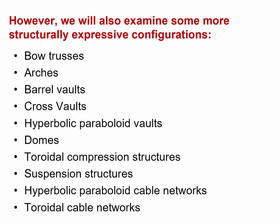While we're going to deal predominantly with this meat and potatoes approach to structures, we're also going to examine some more structurally expressive configurations such as bow trusses, arches, barrel vaults, cross vaults, hyperbolic paraboloid domes, toroidal compression structures, suspension structures, hyperbolic paraboloid cable networks, and toroidal cable networks.